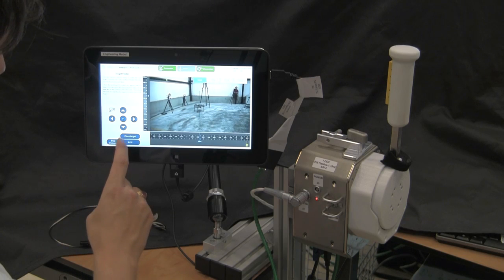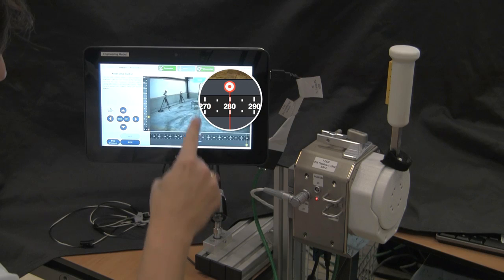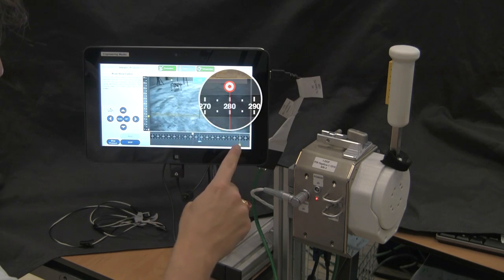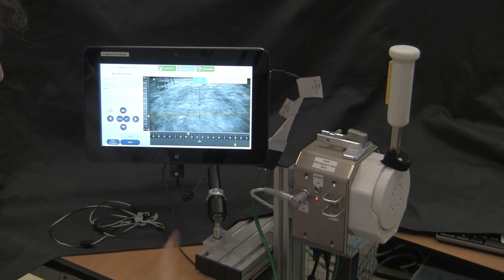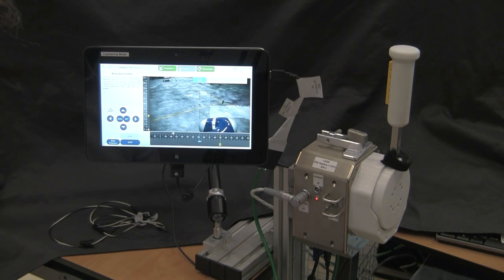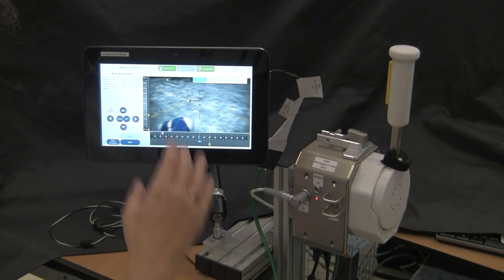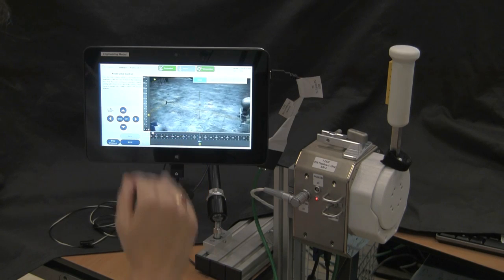Once it is aligned you can press the place target button which places the location of the target in the rover coordinate frame so you can keep spatial orientation while the camera zooms back to the driving mode. When the rover drives the camera always looks forward.